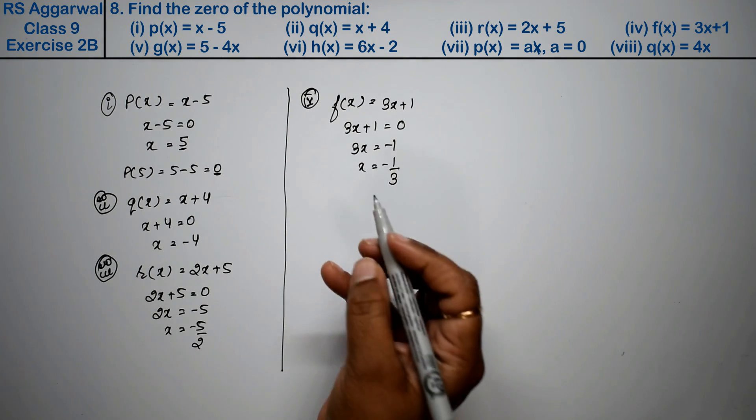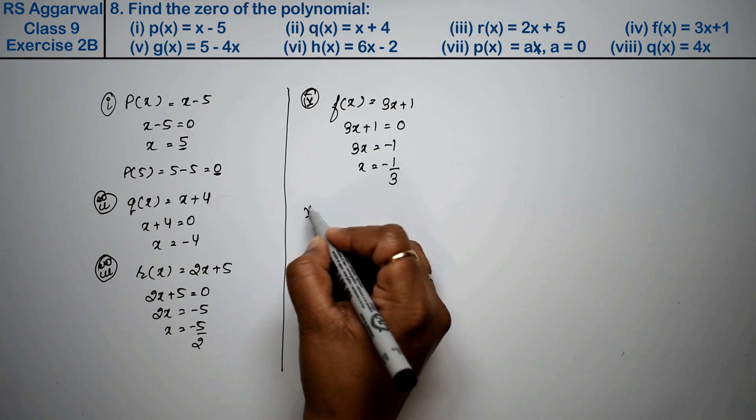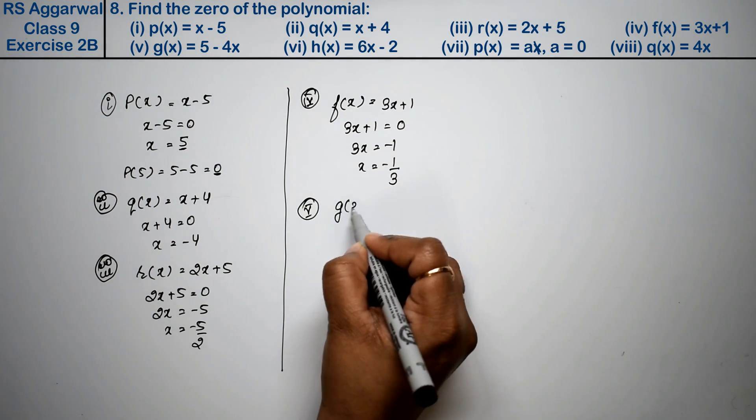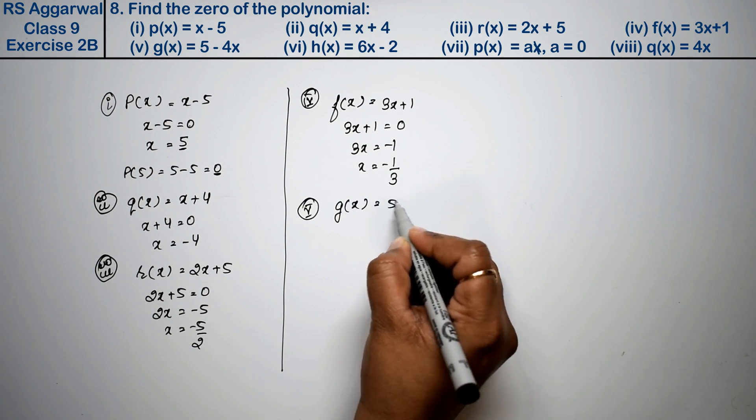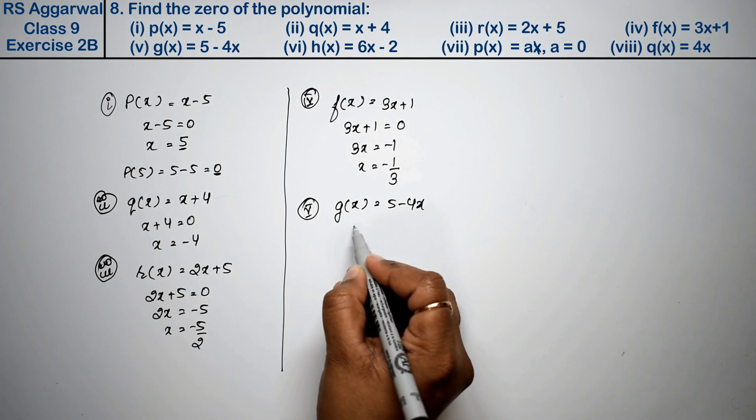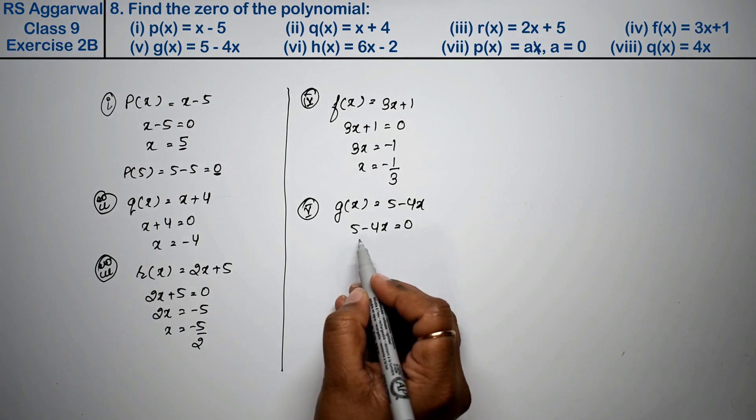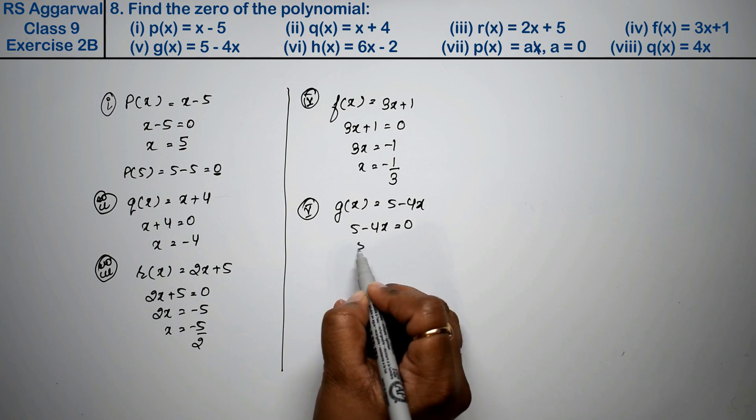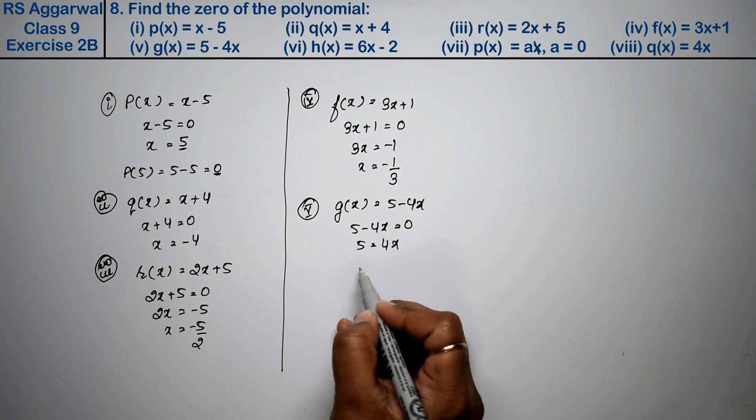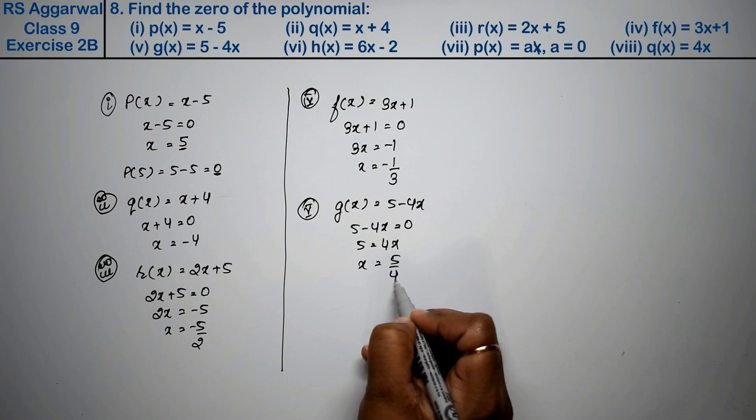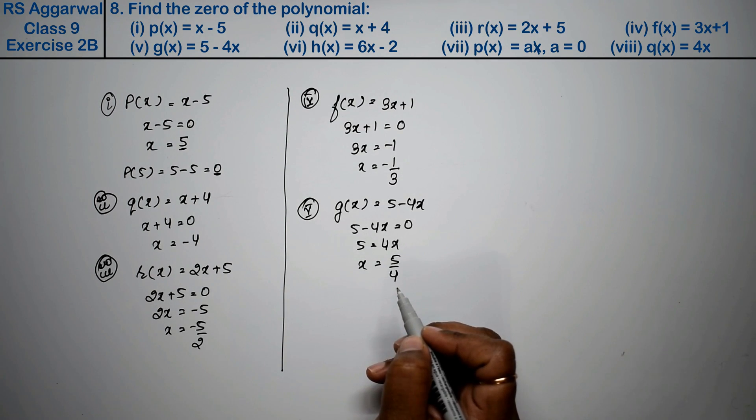For 5 minus 4x, setting the value to 0, we see that 4x moves to the other side giving 5 equals 4x. What's the value of x? This divides, so 5 upon 4 is the answer.